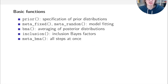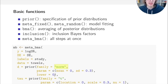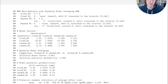The basic functions of the package allow you to specify priors, fit models, average across models, and compute inclusion Bayes factors. All four steps are combined in a single function called meta_bma. You specify standard meta-analysis input — effect sizes, variances, study labels — a prior for the overall effect size such as a normal distribution with mean zero and standard deviation 0.3 truncated at zero, and a prior for heterogeneity. The output includes Bayes factors, model-averaged results, posterior probabilities, and parameter estimates.